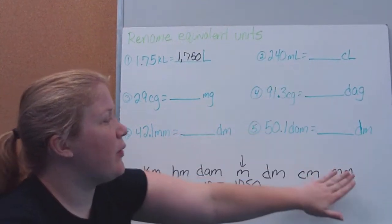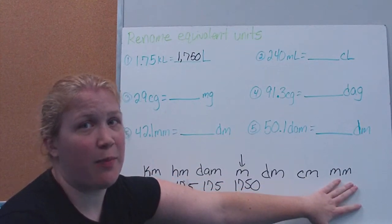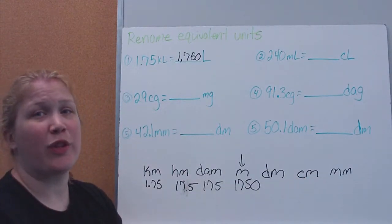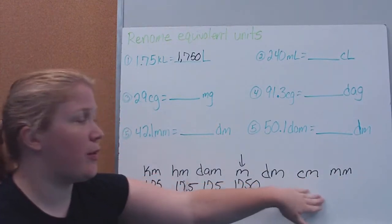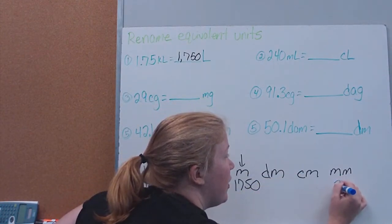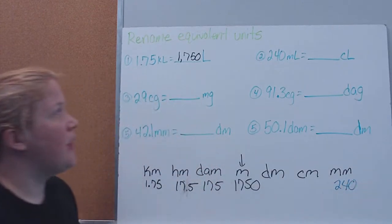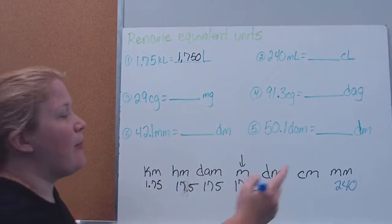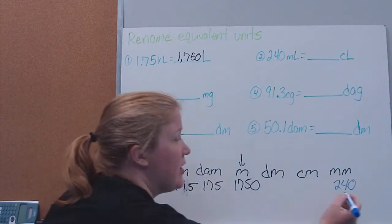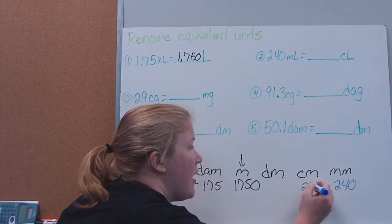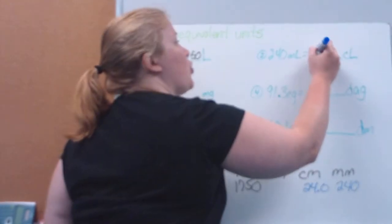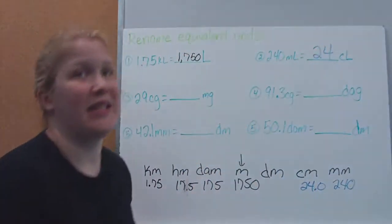Next example: starting with milliliters and converting to centiliters. Going from a smaller unit to a larger one, we'll end up with a smaller number. We have 240 milliliters. Moving one spot to the left means the decimal also moves one spot to the left, and we get 24.0 — or 24 centiliters.